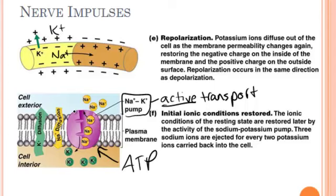That is how action potentials happen — the electrical system that allows our nerves to send signals up and down and stimulate all parts of our body. This was an overview of how that works. I encourage you to look at some videos and animations about how depolarization, repolarization, action potentials, and returning to initial conditions happen, so you can see an animation of how these things work.